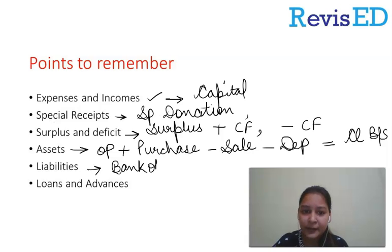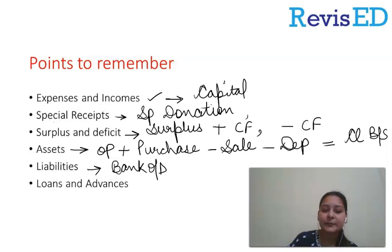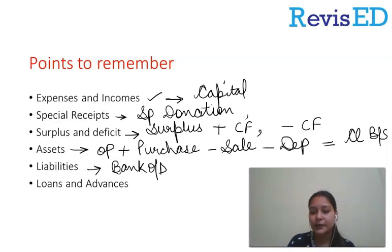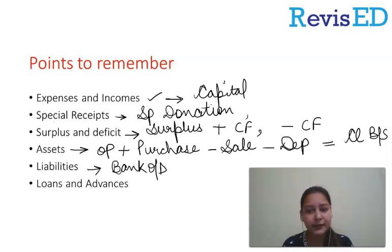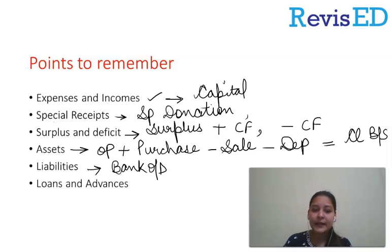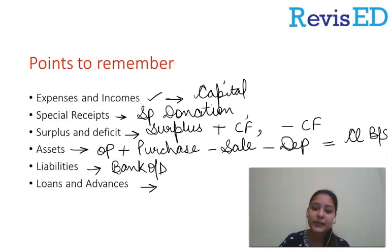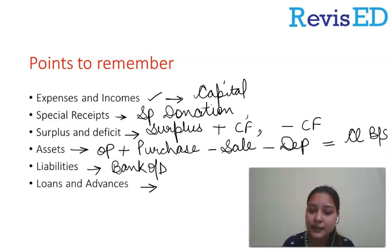Next are liabilities. Liabilities such as bank overdraft are recorded on the liabilities side, along with capital fund. Just as in final accounts of a company, for NPOs also we record liabilities on the liabilities side — current liabilities and long-term liabilities. Last is loans and advances.